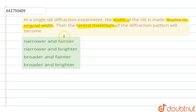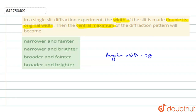Initially, if the angular width is y, then when the slit width is doubled, we need to see what happens. The general expression for the angular width of the central maximum is given by 2λ/a.